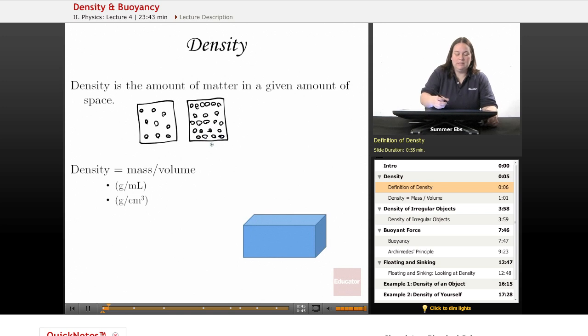And what that means is there's more matter right here on the right and less matter on the left. More matter means it's more dense because it has more matter in that same amount of space.